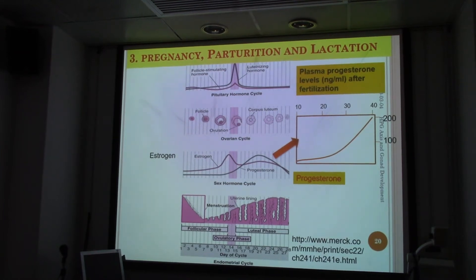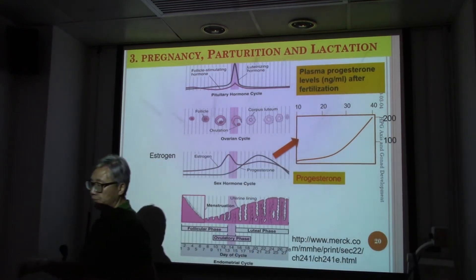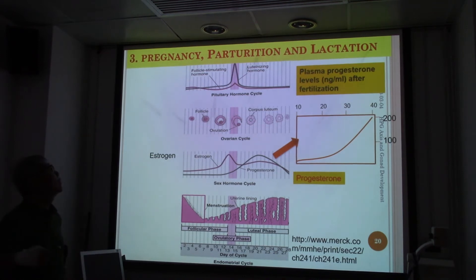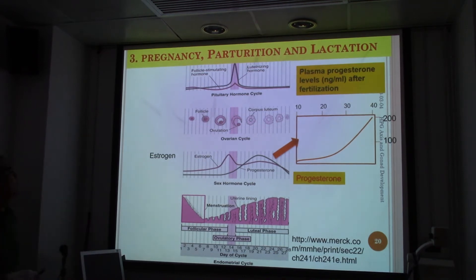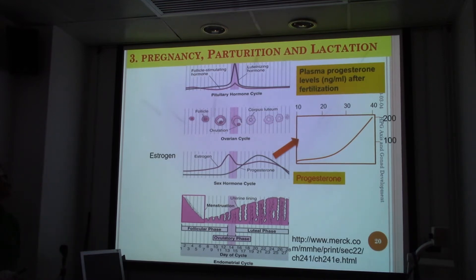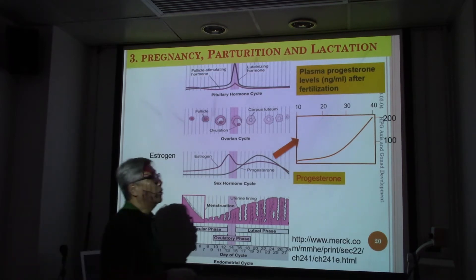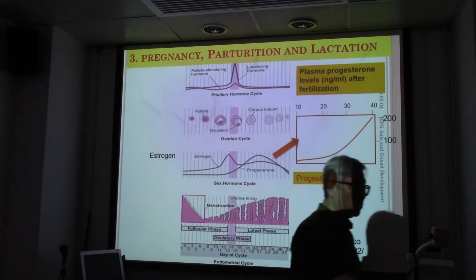In this first video, we talk about pregnancy, parturition, and lactation. We review the actions of follicle stimulating hormone (FSH) and luteinizing hormone (LH). They are connected to tropins from the pituitary gland, also controlled by GnRH.